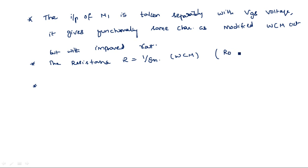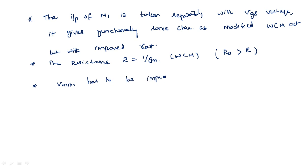Our R0 in this case is greater than the Wilson circuit's R value. Vmin has to be improved further.